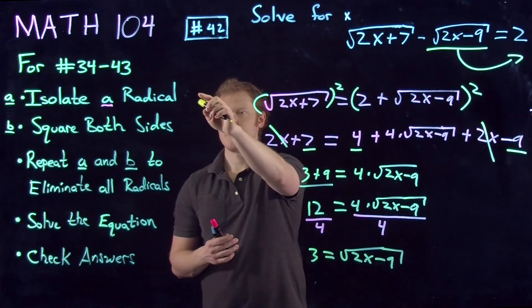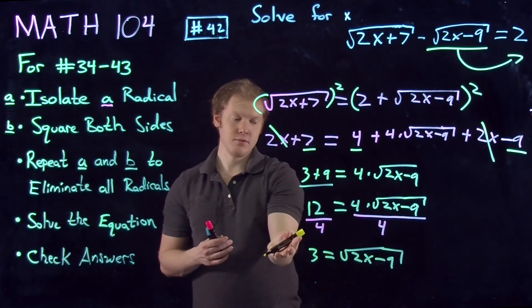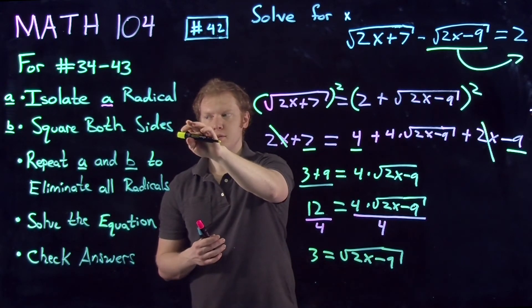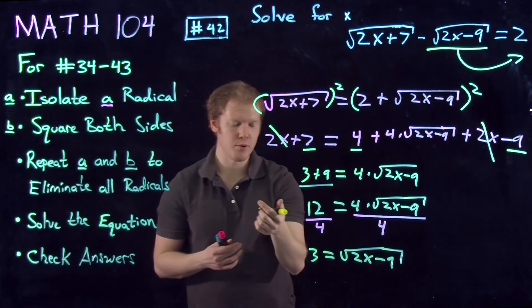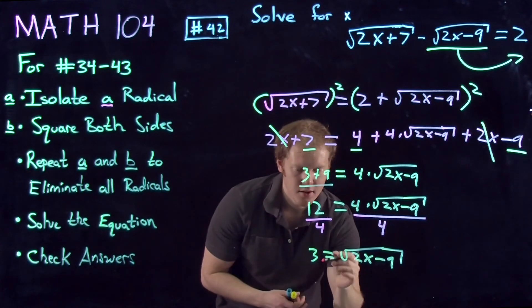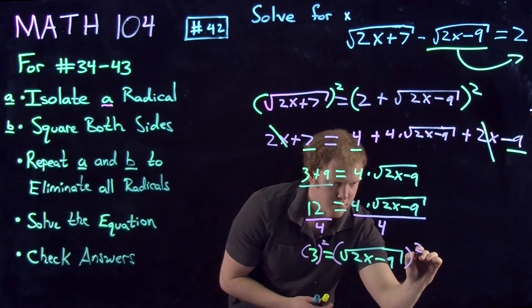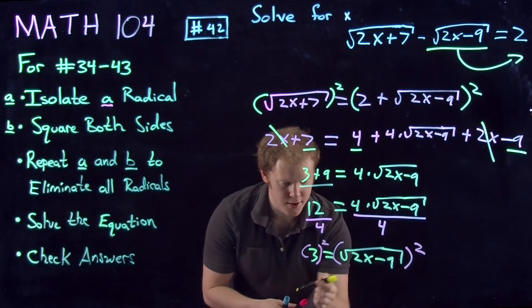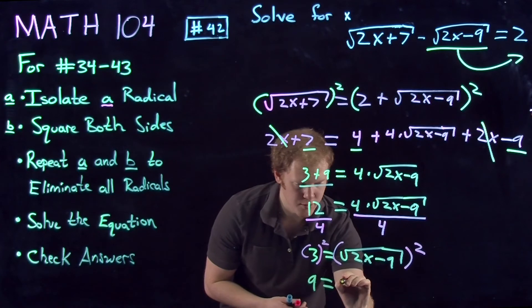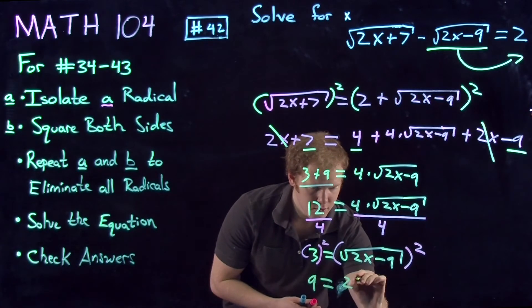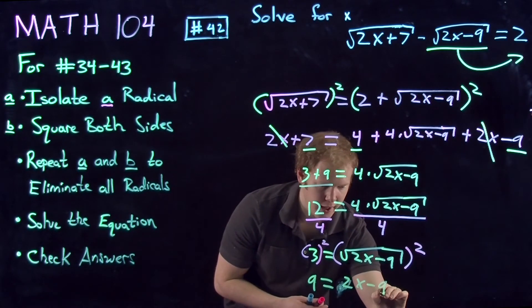Next we want to do step A again—isolate a radical, which we've done—and then step B: square both sides, which gives us the following. This gives us 9 equals 2x minus 9.